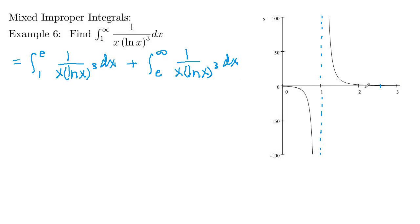By intuition, that infinitely long horizontal strip looks small — it might be finite. But the infinite vertical strip is pretty fat near x = 1. So I'm thinking the first integral may be infinite. Let's look at that one first, because if it's infinite, we just stop and say the integral diverges.